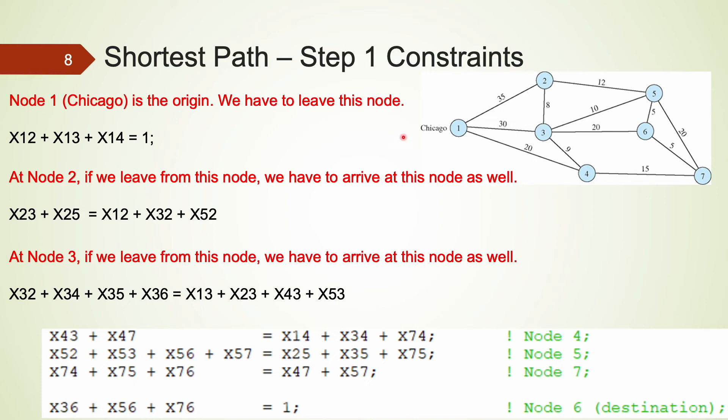At node 2, first of all, I am not sure whether the path needs to pass through node 2. Well, if the path indeed passes this node, we have to arrive at this node first, and then we also have to leave from this node. We can leave from this node 2 by 2,3, 2,5, and we can arrive at this node by 1,2, 3,2, and 5,2.